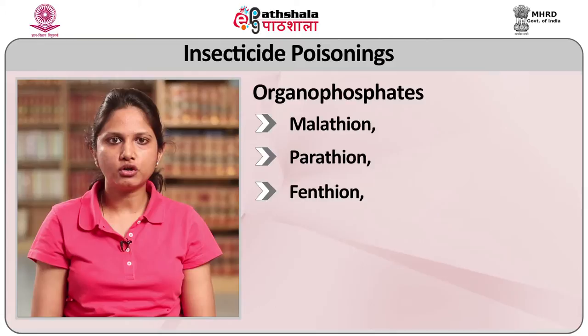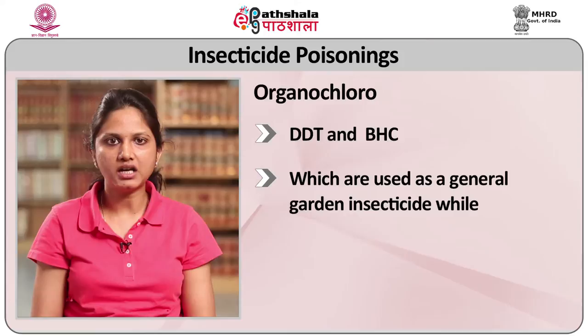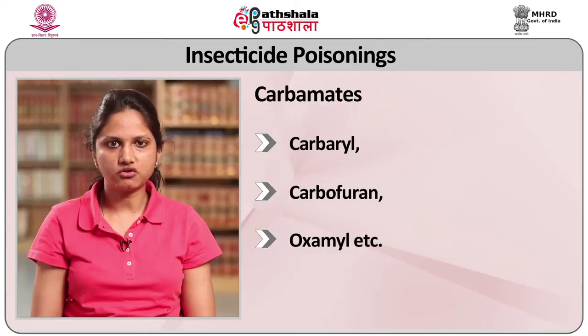Organophosphates include malathion, parathion, fenthion, diazinon, chlorpyrifos, serine, etc. Organochloro compounds include DDT and BHC which are used as general garden insecticides, while endrin, dieldrin, etc. are other examples of this class. Carbamates include carbaryl, carbofuron, oxamyl, etc. There are other groups of insecticides derived from plants — for example, pyrethrum and pyrethroids — which are commonly used insecticides and usually are not very poisonous to humans.